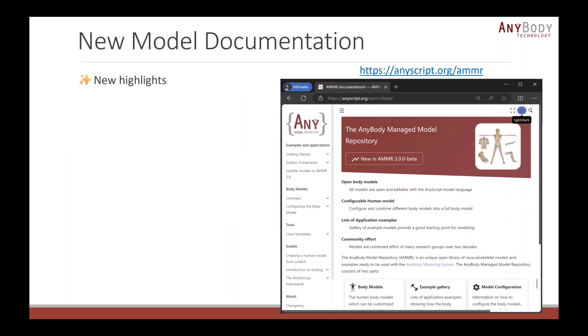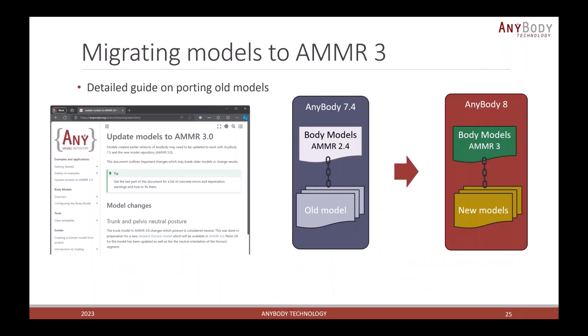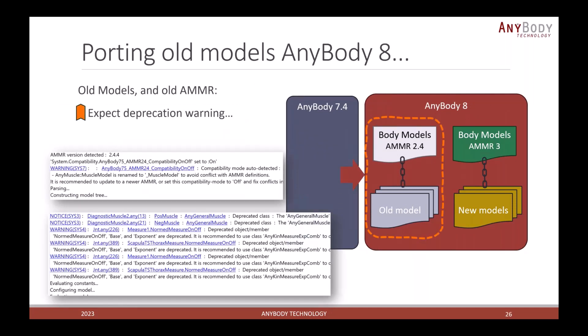This brings us to our new model documentation site. Some highlights, you can go around and check the change log to see everything that has changed. There's also a new section that has documentation for all these class template tools that are part of the model repository. The documentation site has a very important section if you have old models that you want to port to the new model repository. There is this update models to AMR 3.0 that will help you do this update. If you have models based on 7.4, it will tell you some of the issues that you can run into. If you just took your models and the model repository for 7.4 and loaded it with version 8, that will in almost all cases work. But you will see a lot of deprecation warnings because a lot of things have changed. It is also possible to silence all these deprecation warnings if you just want to continue work with an old model.